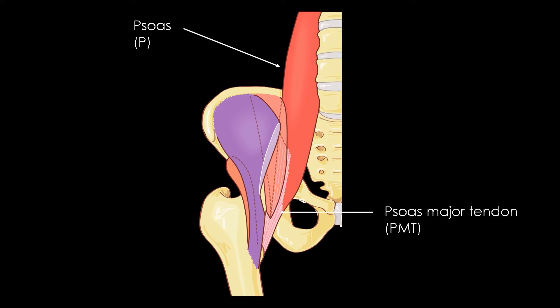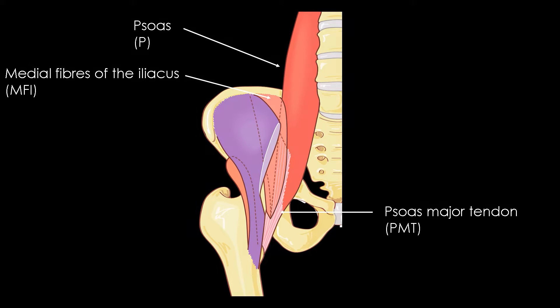The psoas muscle originates from the lateral sides of the discal vertebral complexes and transverse processes T12-L5. The muscle bundles of the psoas are directed downwards and end up in a consistent psoas major tendon. This tendon passes under the inguinal ligament in front of the superior pubic ramus and the coxofemoral joint and inserts onto the lesser trochanter.